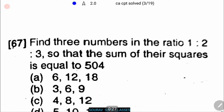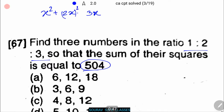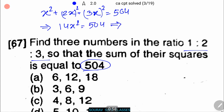Since the ratio of the three numbers is 1:2:3, let the first number be x, the second number be 2x, and the third number be 3x. The sum of their squares equals 504, so x² + (2x)² + (3x)² = 504. Simplifying, we get 14x² = 504, which means x² = 36, so x = 6.